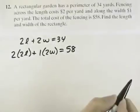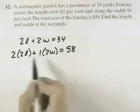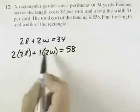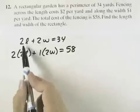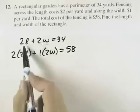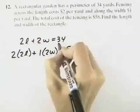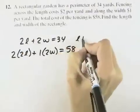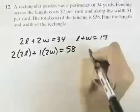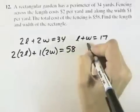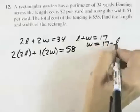So these are the equations we have to work with. Both equations have two variables, so we can solve one equation for one of the variables. If we divide the first equation by 2, we get L plus W equals 17. Solving for W, we get W equals 17 minus L.